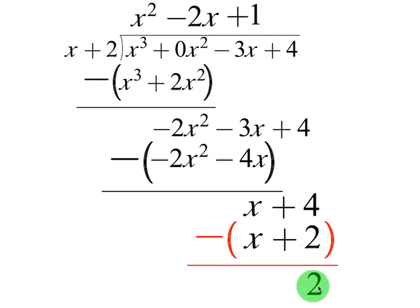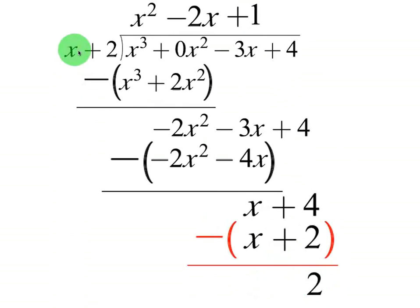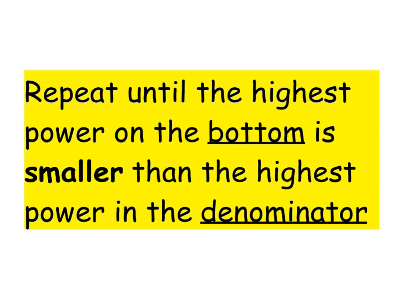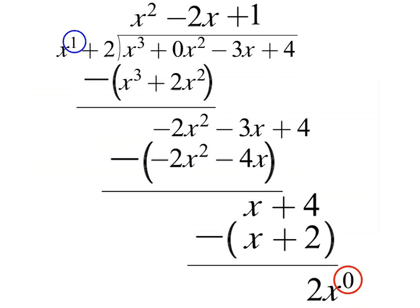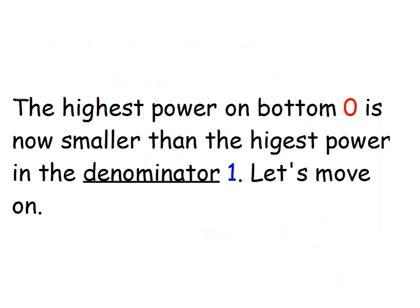Is the power here smaller than that? Yes — it's a constant, which is 2x to the zero, basically zero, while the denominator has power 1. When you get a number down here and a variable in the denominator, you know you're done. The highest power on the bottom is 0, which is smaller than 1, so we're ready to write the answer.